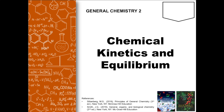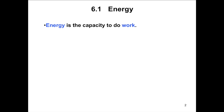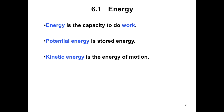To discuss chemical kinetics and equilibrium, we have to talk about energy. We all know that energy is the capacity to do work. Whenever you throw a ball, ride a bike, or read a newspaper, you use energy to do work. There are two types of energy: potential energy, which is the stored energy, and kinetic energy, which is the energy of motion.